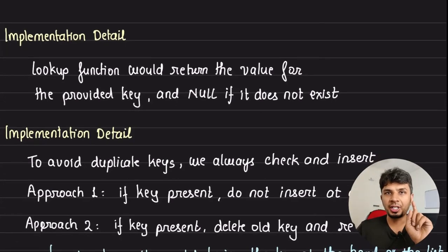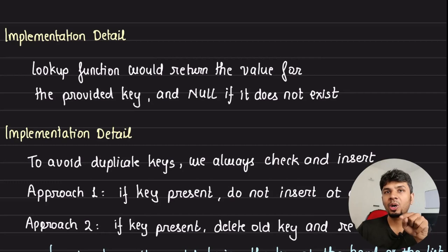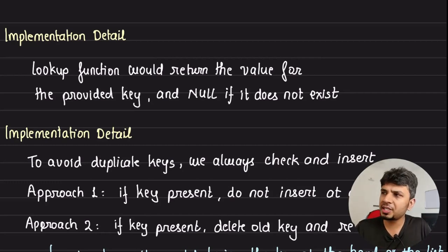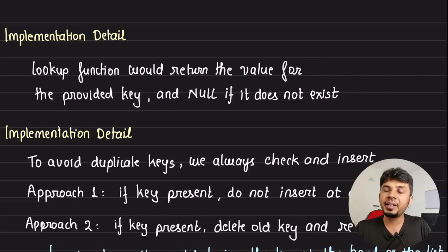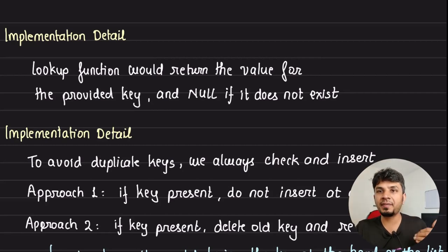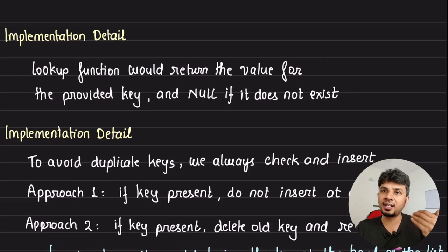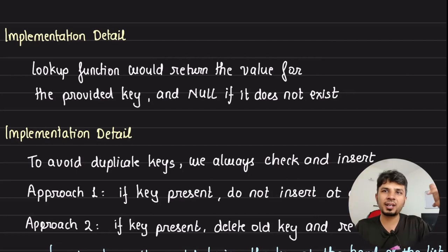The lookup function returns the value for the provided key, or null if it does not exist. Instead of having a separate function that checks key existence and another that does something around that, we have a single lookup function: given a key, return the value if it exists, or null if it doesn't. This avoids redundant implementation of having both a 'contains' function and a 'lookup' function.